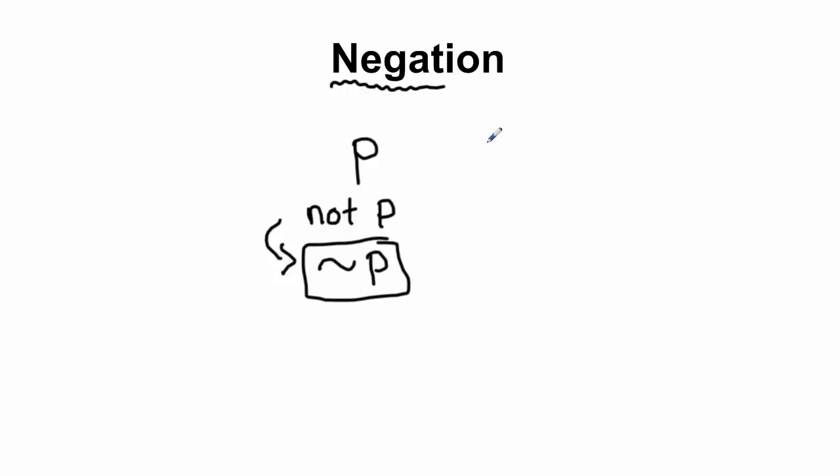For instance, if I have a hypothesis of today is hot, then the negation of this would be today is not hot.